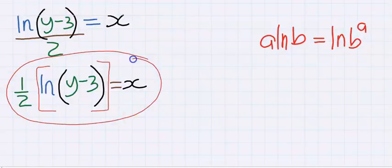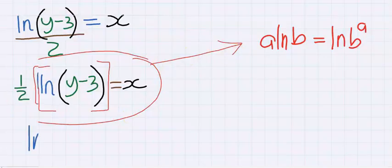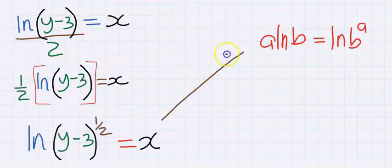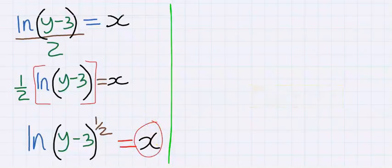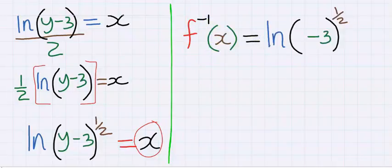Next, step number three: take the inverse of x, that is, f^(-1)(x) is equal to... and instead of y, I'm now going to have x. This is the inverse of the function, which is our final answer.